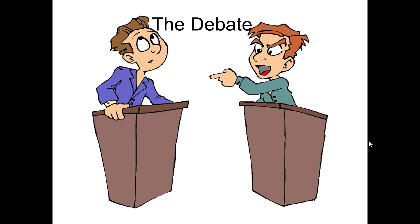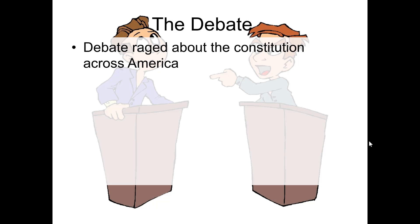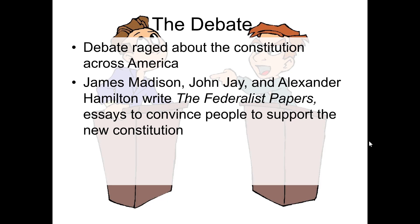The debate began between the Federalists and Anti-Federalists. The Federalists were better organized and immediately began writing essays and arguments to support their cause and get people to support the new Constitution. There were three key individuals behind this Federalist movement: James Madison, John Jay, and Alexander Hamilton. They wrote a series of essays called the Federalist Papers, which were argument essays meant to convince people why they should support the new Constitution.